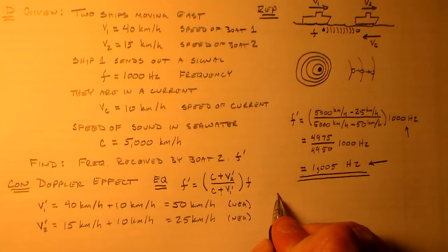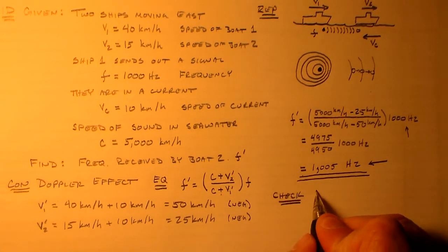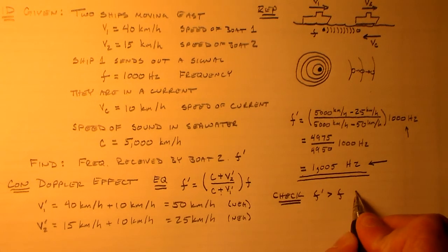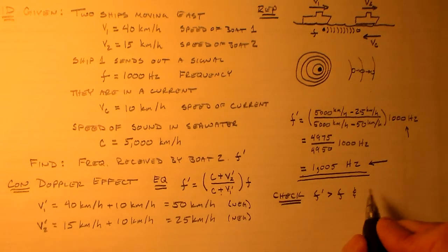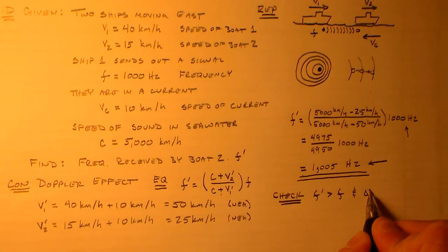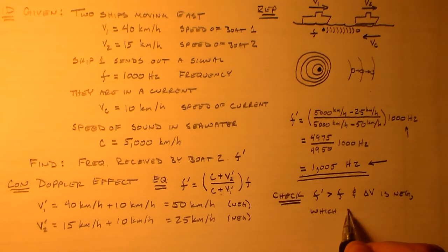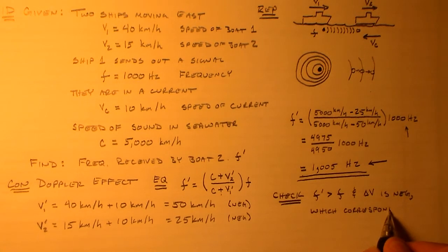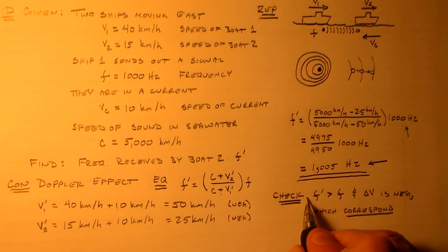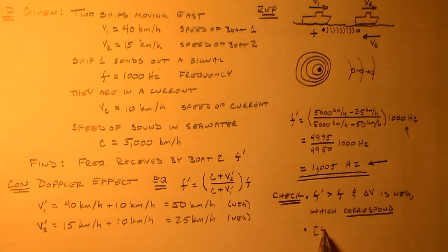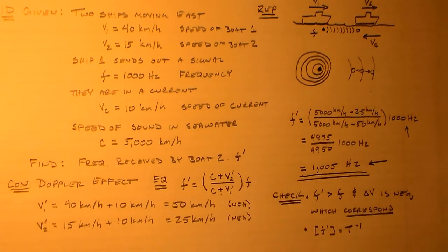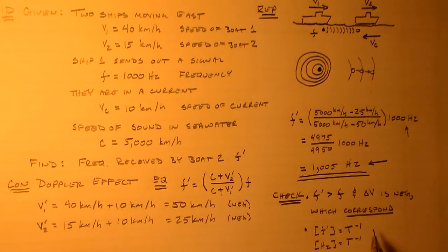So for the check, f prime is greater than f and delta v is negative which correspond to each other. So that's one check. Another one is the units of f prime are one over time and the units of hertz are one over time so that checks out as well. So that seems to be a fairly reasonable answer.